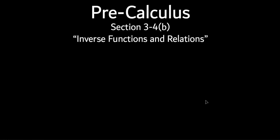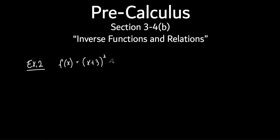Let's move on and do an example. So f of x equals x plus 3, that's squared, then minus 5. We're going to do two questions by hand, and the third we're going to do with a graphing calculator. I like to use Desmos rather than your normal Texas Instrument graphing calculator. We're going to take a look at it and see what it looks like.